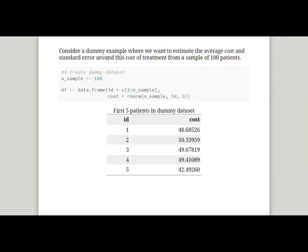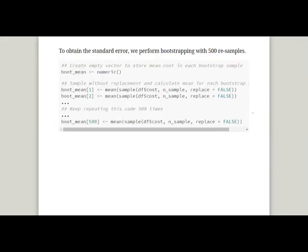Here's a dummy example where you have to do bootstrapping. Imagine you have a dataset with 100 patients and their corresponding cost of treatment. You want to perform bootstrapping with 500 samples to obtain the standard error around the mean cost. One way of doing it is to first set up an empty vector, boot_mean, then run the sampling and calculate the mean of each sample repetitively, repeating this code 500 times.